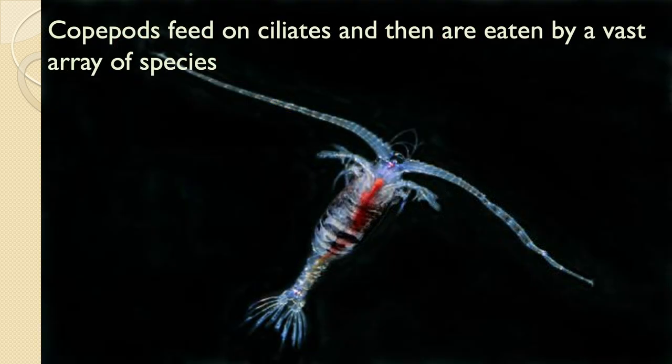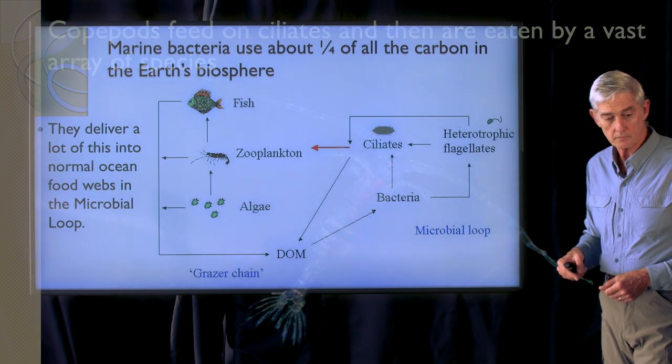They are big enough — the ciliates and some of the flagellates — for the copepods to then be able to graze on them, allowing that flow of energy from bacteria into the bacteria's predators and into the rest of the food chain.